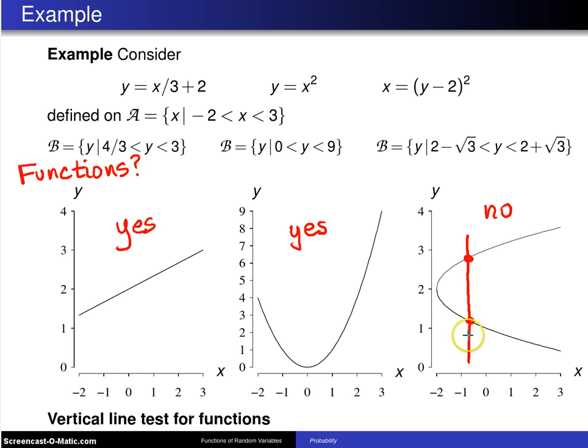that insists that each element in script A is going to map to exactly one element in script B. In this case, one element in script A maps to two elements in script B. And because of that, this is not a function.